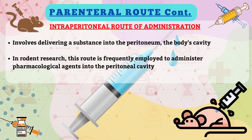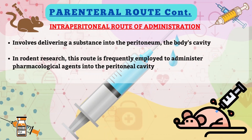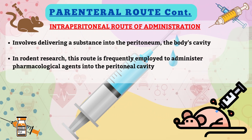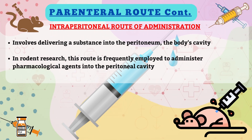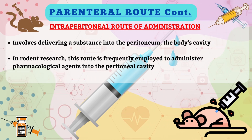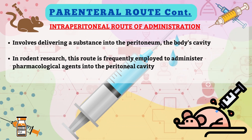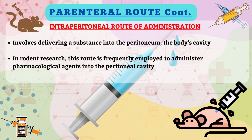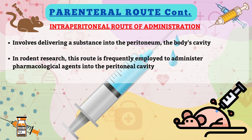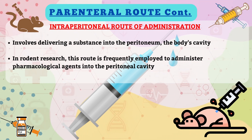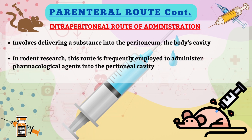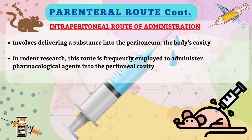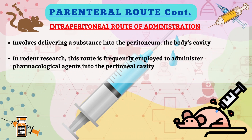Intraperitoneal injection involves delivering a substance into the peritoneum, the body cavity. In rodent research, the intraperitoneal route is frequently employed to administer pharmacological agents into the peritoneal cavity. This method is easy to learn, swift, and causes minimal stress to the animals involved in the study.